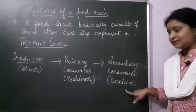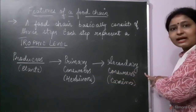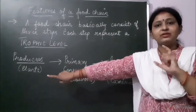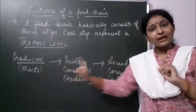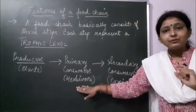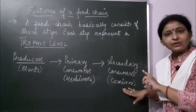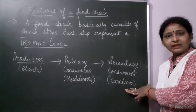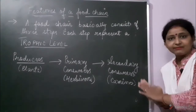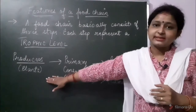Sometimes the primary carnivore may be eaten by a tertiary consumer — the secondary carnivore — so the food chain will contain four trophic levels. Producers are always at the first trophic level because they prepare food from inorganic substances. Primary consumers, that is herbivores, stand at the second trophic level. Secondary consumers, that is primary carnivores, are at the third trophic level. If tertiary consumers are present, they stand at the fourth trophic level.